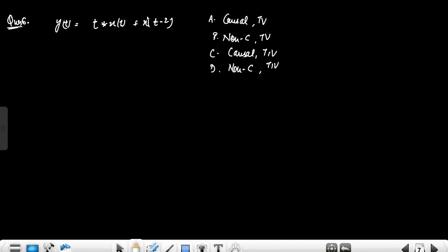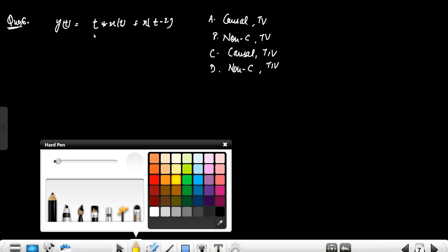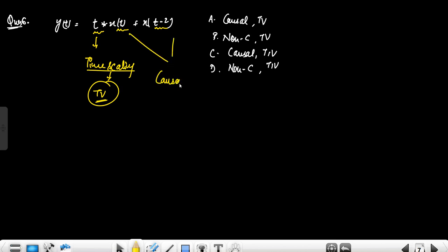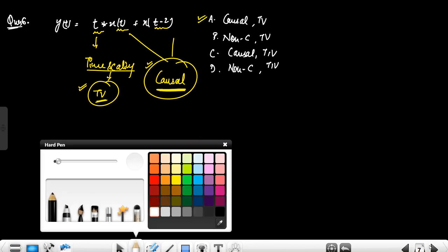For the signal systems question: given y(t) = x(t) + x(t−2), we analyze causality and time-variance. The t multiplication in another expression is time scaling, making it time-varying. For x(t) + x(t−2): output depends only on present and past values, so it is causal. There is no future dependency — only present and past — so the signal is causal and time-variant.